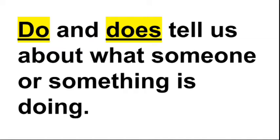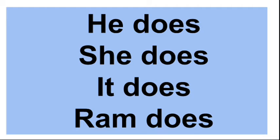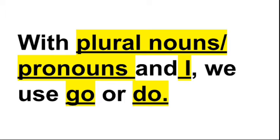Now you need to know a few basic rules. With singular nouns or pronouns, we use goes or does — like he goes, she goes, it goes, Ram goes; he does, she does, it does, Ram does. But with plural nouns and pronouns, and with I, we use go or do.